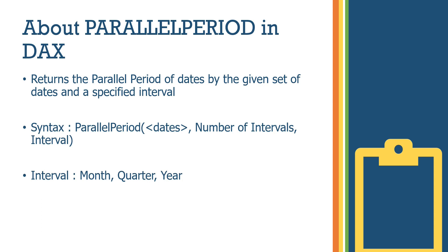The number of intervals — intervals meaning month, quarter, or year — is a key parameter. An important difference between DATEADD and PARALLELPERIOD is that DATEADD supports month, quarter, year, and day, but PARALLELPERIOD does not support day. That is an important distinction.